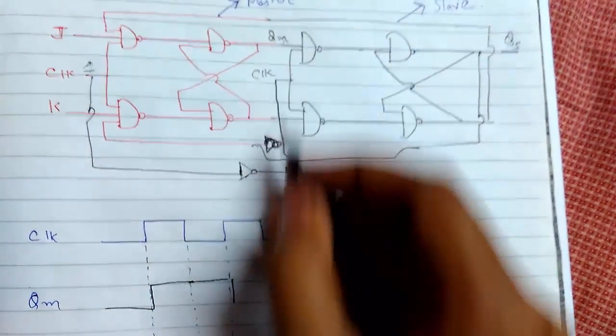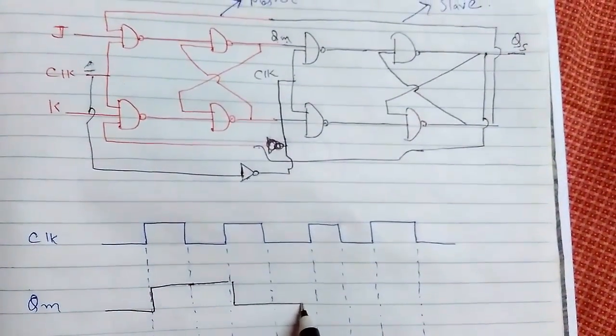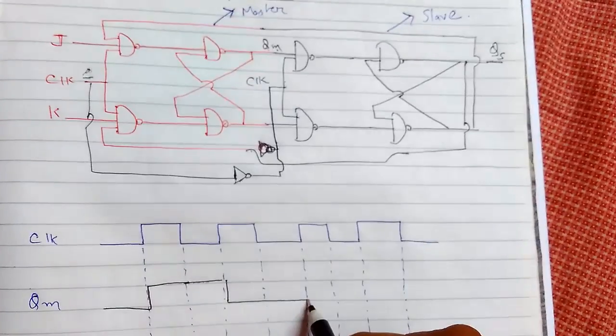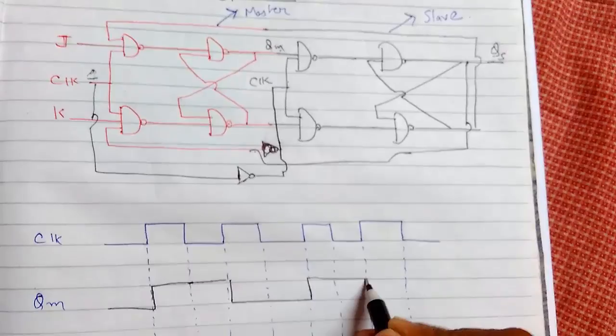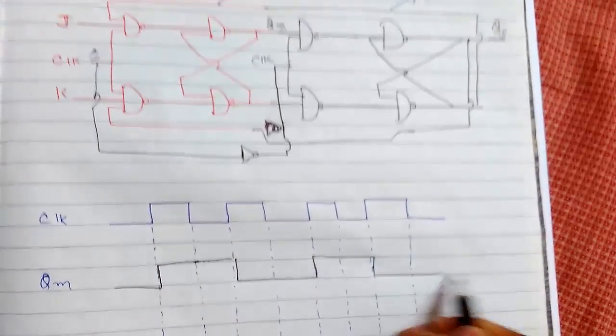Now if we keep this zero, zero will get stored. It will remain for one clock cycle. Now again when this is one, it gets high and it will store for another clock cycle. This will continue like this.